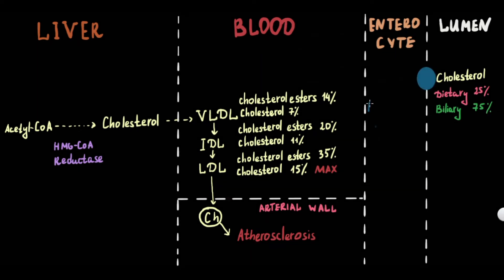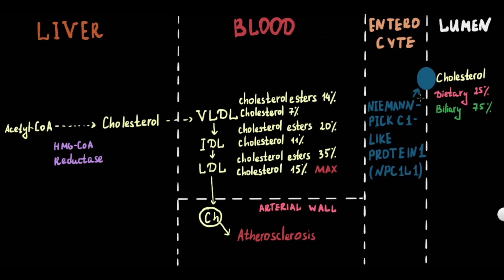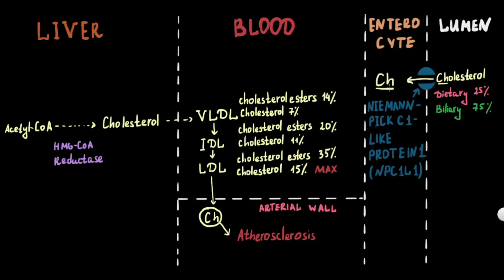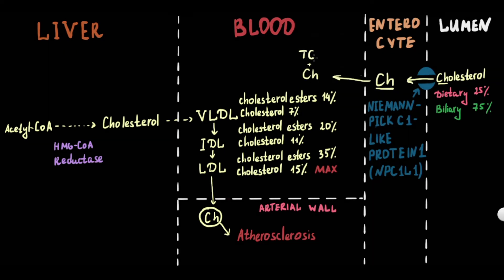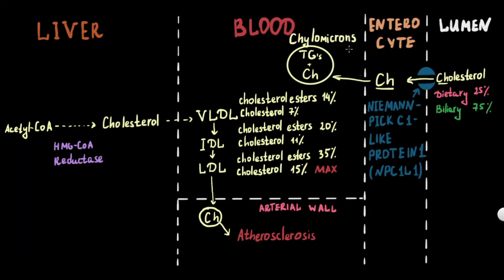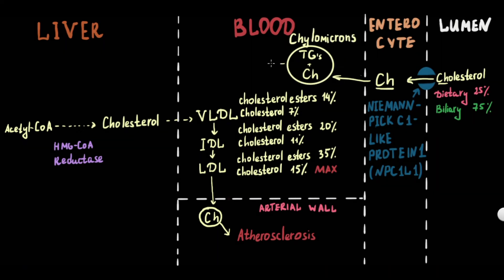Absorption of cholesterol in the intestine is provided by Niemann-Pick C1-like protein 1 (NPC1L1), which transports cholesterol inside the enterocyte. Further, cholesterol with triglycerides is carried from the gut in the form of chylomicrons and can be taken up by the liver for further processing.